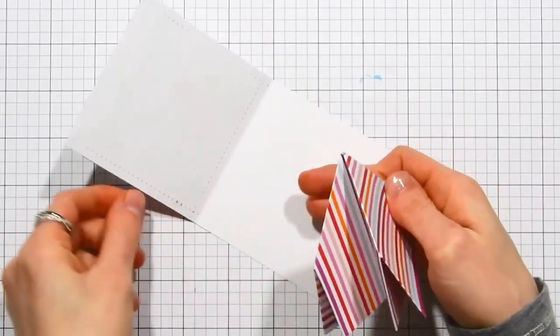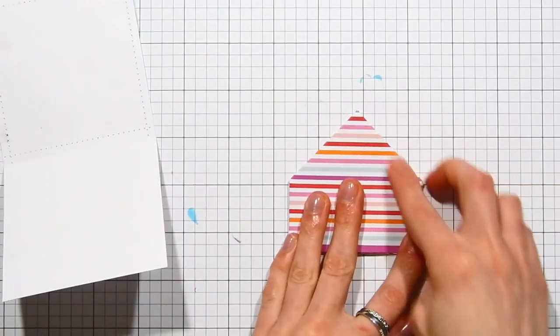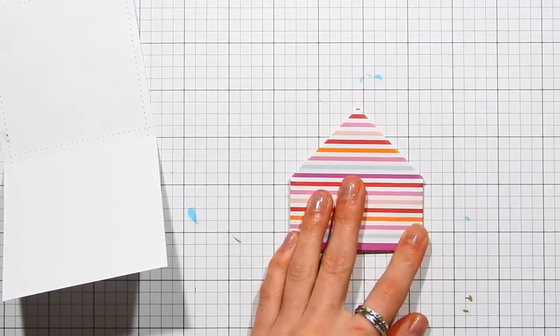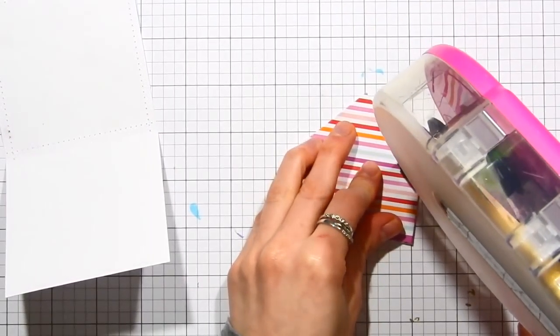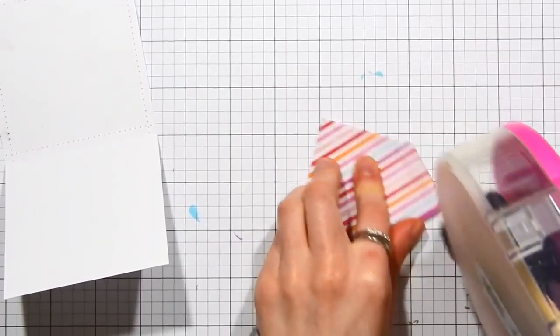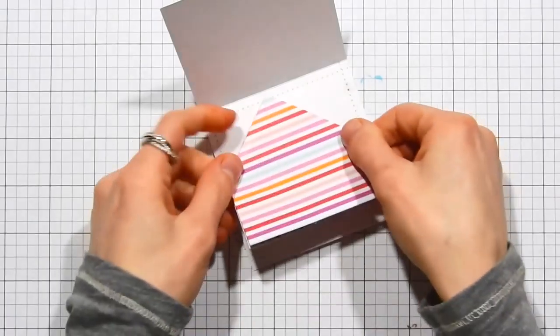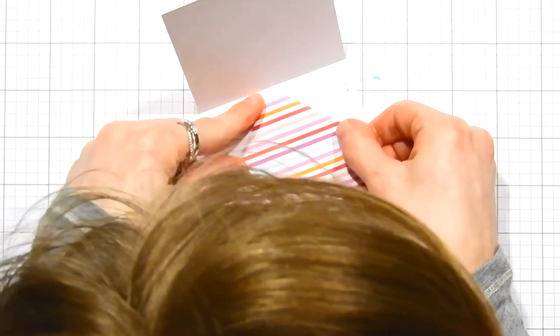I'm going to take some ATG adhesive and I'm going to run this along the edges of this pop-up element. You want to put the adhesive on all four sides. Now I'm going to line up that point with the center fold of our card base. I'm going to press that down really well.